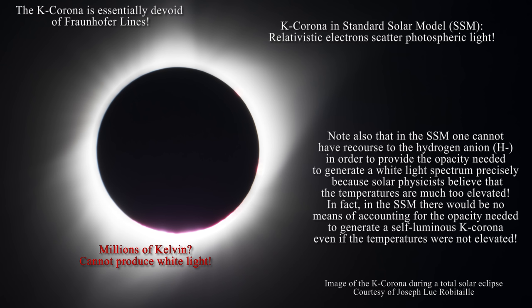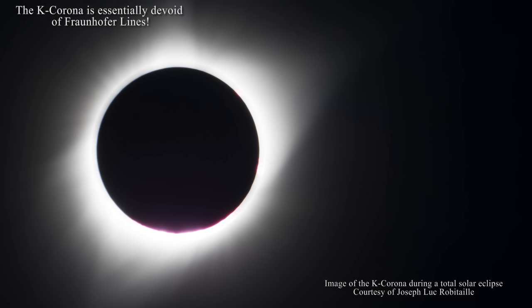Yet if relativistic electrons are able to explain the lack of Fraunhofer lines in the k-corona through scattering, how can we possibly observe the Fraunhofer spectrum on Earth? Clearly these two observations are diametrically opposed to one another if relativistic scattering were actually real. So not only does the standard model require coronal temperatures in the millions of Kelvin, but now relativistic electrons are required to account for the appearance of the k-corona — yet for anyone willing to think about these issues, a few more problems arise.